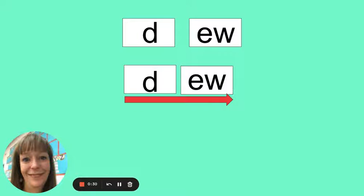All right. Remember E-W can also say OO. Let's say the individual sounds. D, OO. Now let's blend them together. Do. The word is do. Like the dew on the grass.